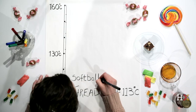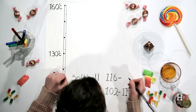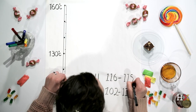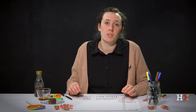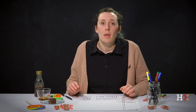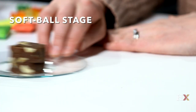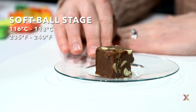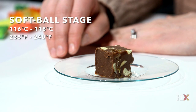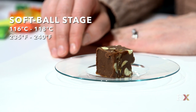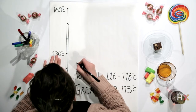The second stage is the softball stage. Between 116 and 118 degrees Celsius, the sugar forms a softball when dropped into cold water that flattens readily in your hand. Fudge is made with sugar that's heated to this temperature.